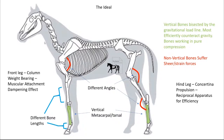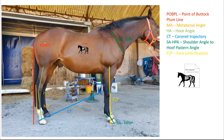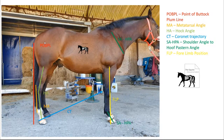To drive home the point: conformation and posture are very different things. We need to understand what farriery can affect or help with, and what farriery can only manage because it can't change conformation. Having outlined that the hoof is a product of everything above it and its interaction with the ground, the first thing to do when you get to a horse is not look straight down at the feet, but look at the general posture of the animal — this tells you a lot about what you can expect to see when you look at the feet.